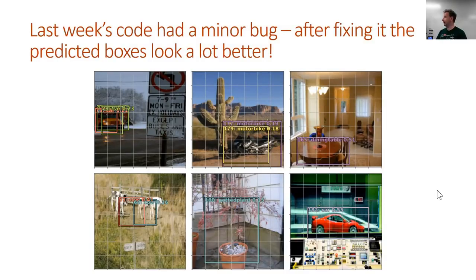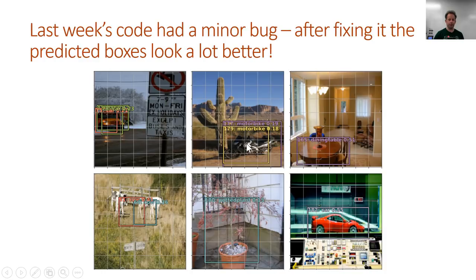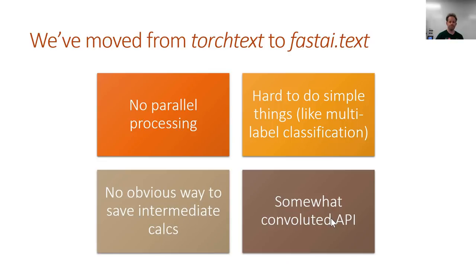I did discover a minor bug in my code last week. The way I was flattening out the convolutional activations did not line up with how I was using them in the loss function, and fixing that actually made it quite a bit better — so my motorbikes and cows and stuff are actually in the right place now. When you go back to the notebook, you'll see it's a little less bad than it was last time.